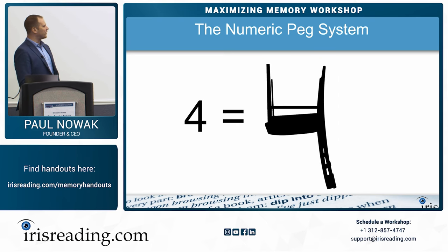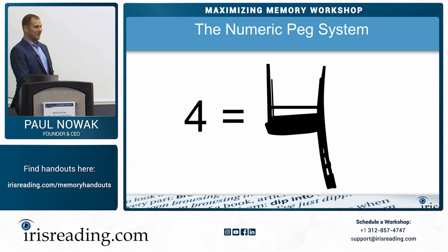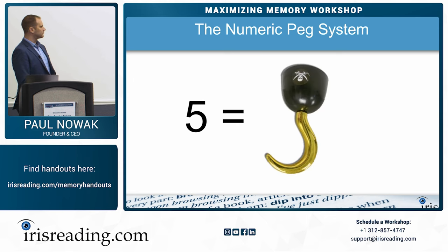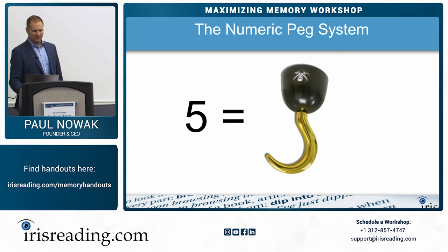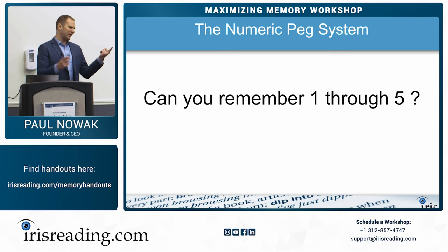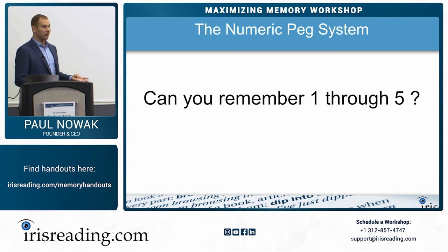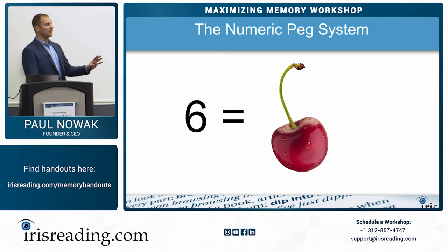Four is a chair — if the chair were upside down, it looks like a four. Five is a hook — see the curvy part of the five? There's the curvy part of the hook. Quick recap: number one is pencil, two is swan, three is McDonald's, four is chair, five is hook. We just have to remember six through ten — five more numbers.